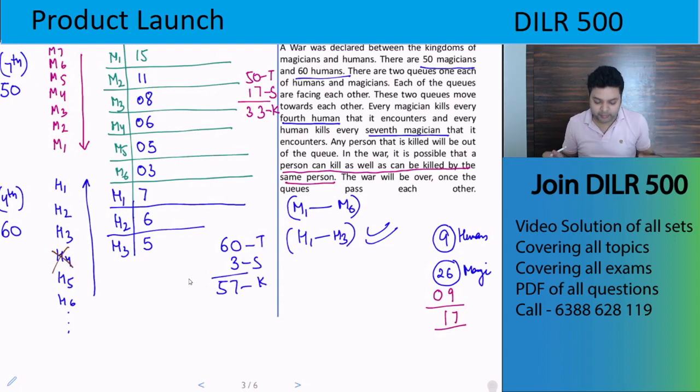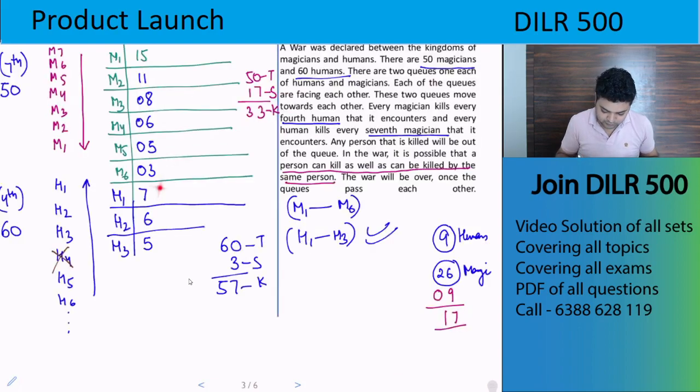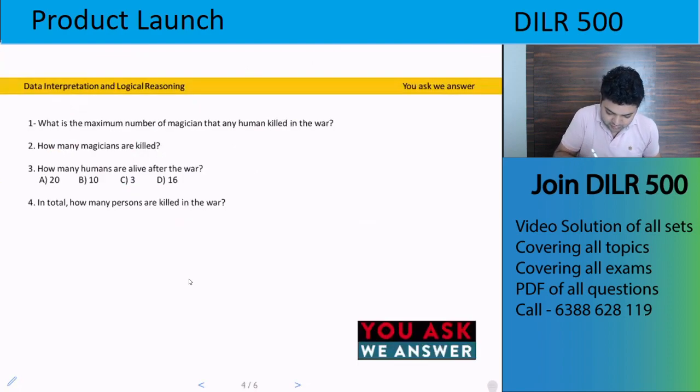Now our entire set is ready. Let's see the questions. First question is, what is the maximum number of magicians that any human killed in the war? The first one will kill the most. So your answer is 7.